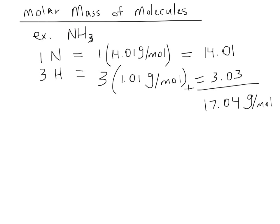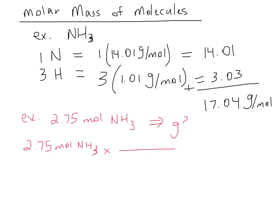That's the first step of a problem. Let's say the question is: you have 2.75 moles of NH3, and I want to know how many grams do you have? You'll start with 2.75 moles of NH3 — that's the only number you have. Because you don't want moles, you'll put it on the bottom and grams on the top. The conversion from moles to grams is the molar mass, which for NH3 is 17.04 grams per one mole. Moles cancel out. We do 2.75 times 17.04 and we get 46.9 grams of NH3.